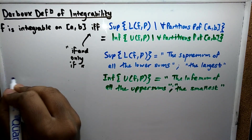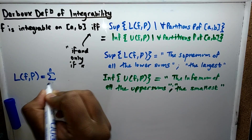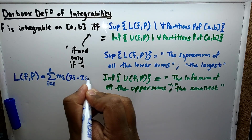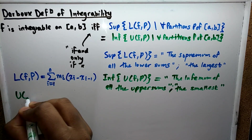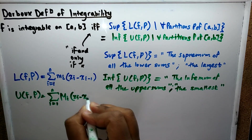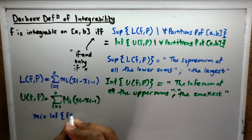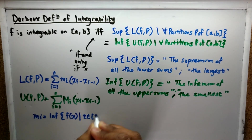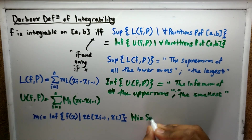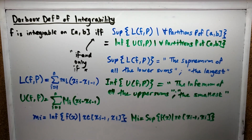The formula for the lower sum is the summation of m_i times (x_i minus x_{i-1}), and the upper sum formula is the same but with M_i. Here x_i and x_{i-1} define a partition, which is a sub-interval of [a,b]. The small m_i is the smallest possible value of f(x) on the sub-interval [x_{i-1}, x_i], and capital M_i is the biggest possible value.